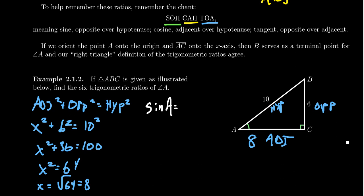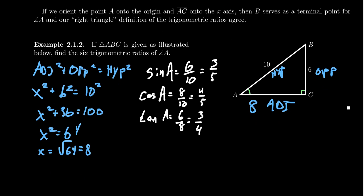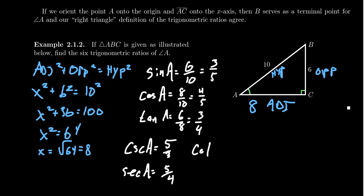Using SOHCAHTOA, we can compute all six trigonometric ratios. Sine of A is opposite over hypotenuse: 6/10, simplified to 3/5. Cosine of A is adjacent over hypotenuse: 8/10, simplified to 4/5. Tangent of A is opposite over adjacent: 6/8, simplified to 3/4. For the remaining ratios using reciprocal identities: cosecant of A equals 5/3, secant of A equals 5/4, and cotangent of A equals 4/3.